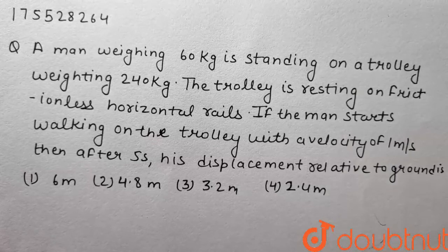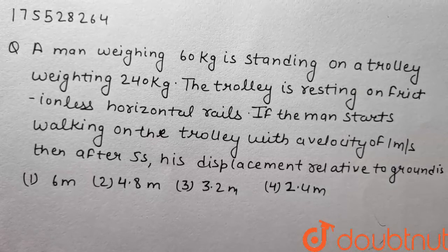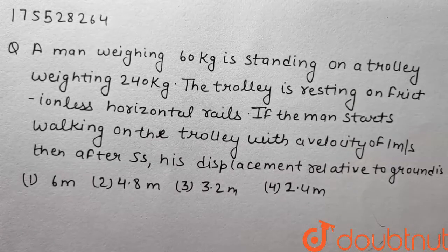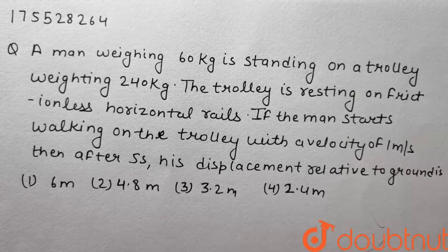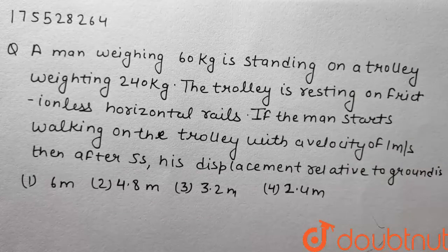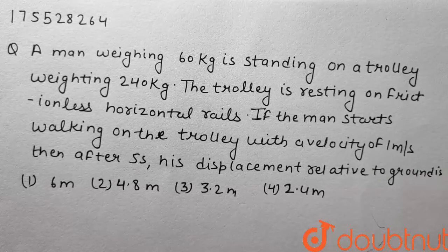A man weighing 60 kg is standing on a trolley weighing 240 kg. The trolley is resting on frictionless horizontal rails. If the man starts walking on the trolley with a velocity of 1 meter per second, then after 5 seconds, his displacement is related to the ground.